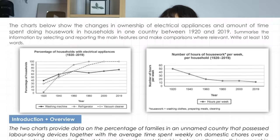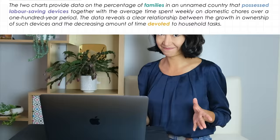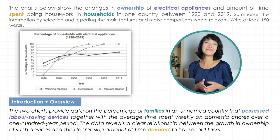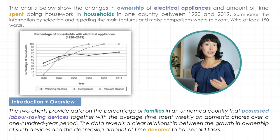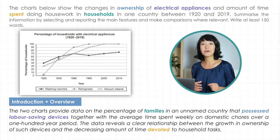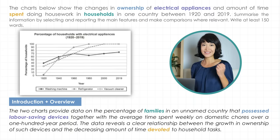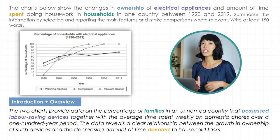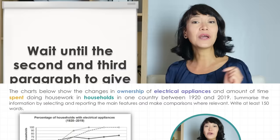Remember how important it is to summarize using synonyms. Three things stand out. First, the synonyms — to achieve a high score in task achievement and lexical resource, you need to paraphrase. So, households become families; electrical appliances are labour-saving devices; time spent can be time devoted; ownership changes to the verb possessed; and the charts no longer show — they provide data on. Notice in this first part how general everything is: no figures, no raw data yet. Wait until the second and third paragraphs to give out the details.